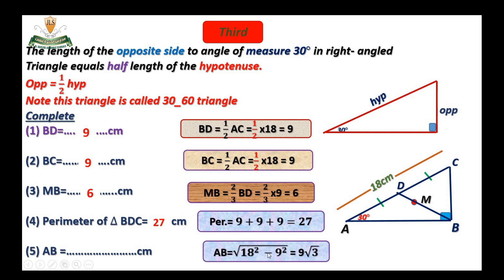To find the length of AB, we use the Pythagorean theorem: AB equals the square root of the hypotenuse squared minus the other side squared, which is the square root of 18 squared minus 9 squared, equals 9 root 3. Good luck!